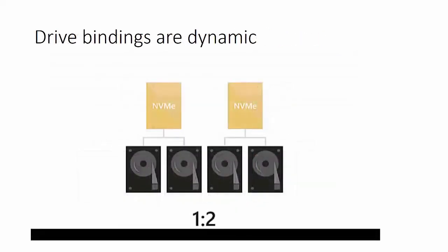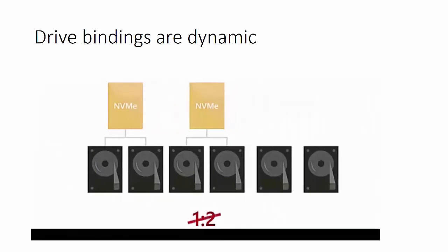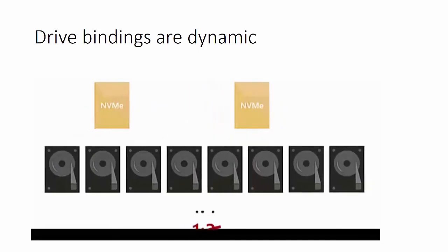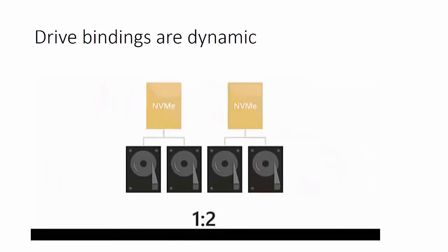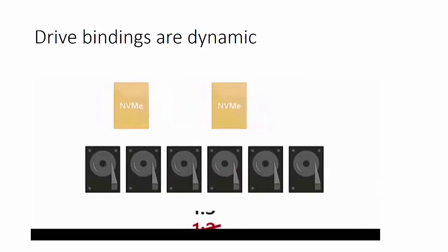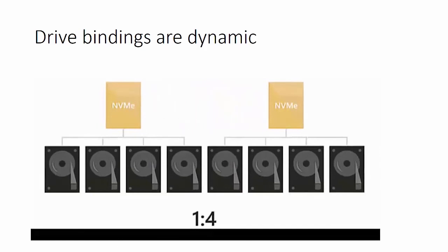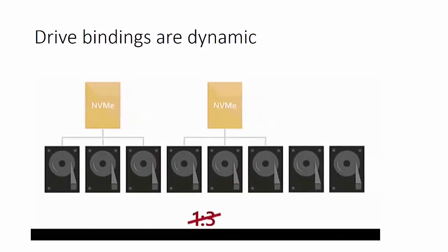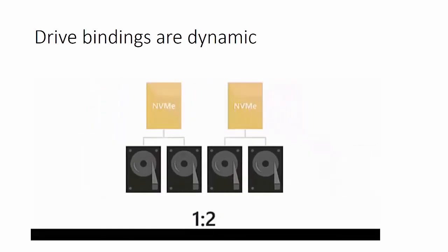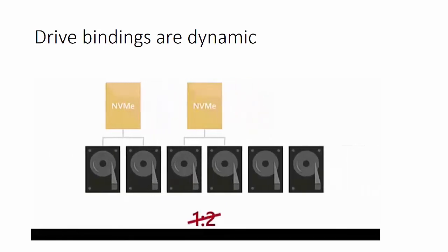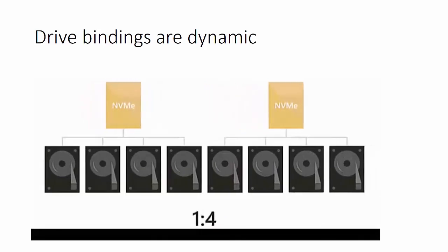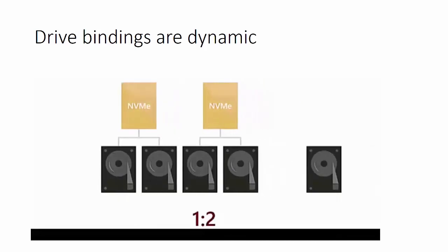Drive bindings are dynamic as well. NVMe drives are bound to hard disk drives, but when you add more drives the ratio needs to be rebalanced. For example, a one-to-two ratio may shift to one-to-three or one-to-four as more capacity drives are added. You can also add more NVMe drives to maintain the same ratio, such as one-to-two, depending on your configuration goals.